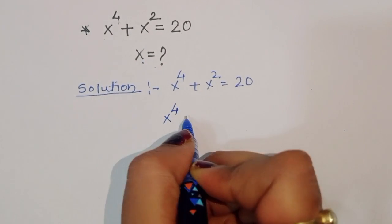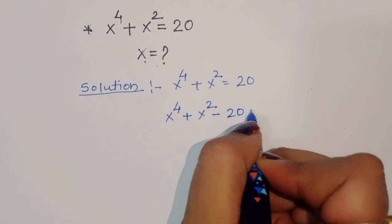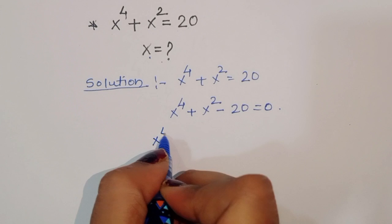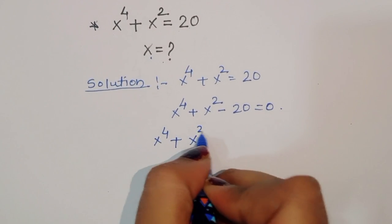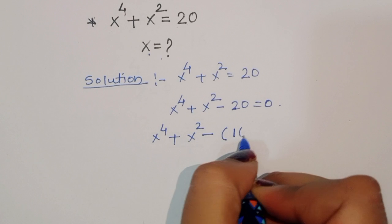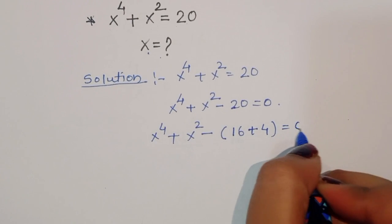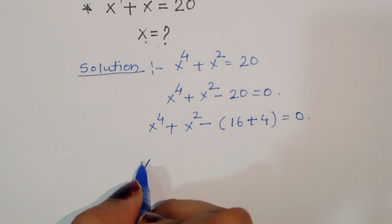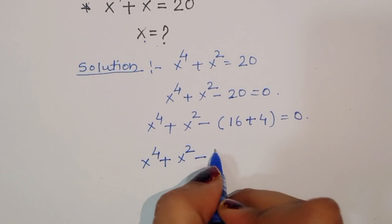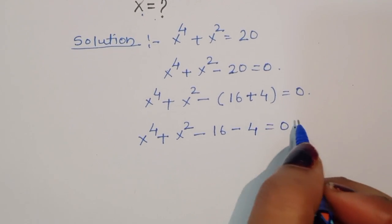We can write this as x⁴ + x² - 20 = 0. Now, we can split 20 as 16 + 4, so x⁴ + x² - 16 - 4 = 0.